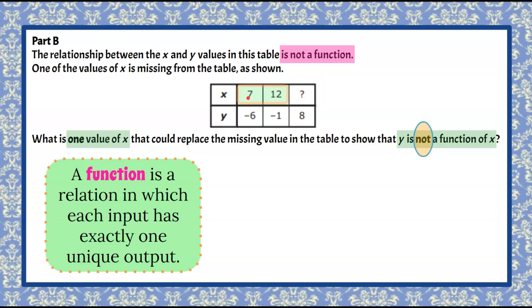So that tells me that if I take 7 and 12, let's start with 7. If I repeat 7 as an input, now this is not a function because 7 as an input has an output of negative 6 and positive 8, and it is not a function because there isn't only one unique output, there are two.